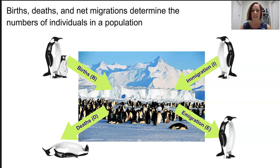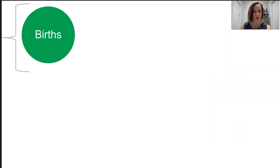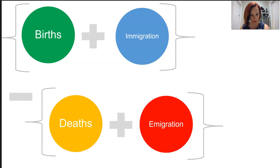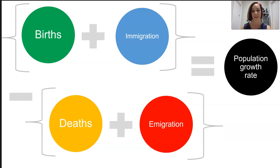If we've got more births and more organisms immigrating, we're going to have a higher growth rate. If we have more deaths and emigration, then the population is going into decline. The formula that we use is the births plus the immigration, take away the number of deaths plus the number of emigration. That's going to give us our population growth rate per a certain period of time. We need generally a number per year because for a rate, it needs to have a time period.